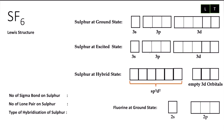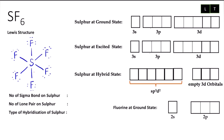Now we go for the last one — SF₆. We have the Lewis structure for SF₆ like this, and then label the sigma bonds. I have 6 sigma bonds for SF₆ — so 6 sigma bonds on sulfur and zero lone pairs, making the total 6.